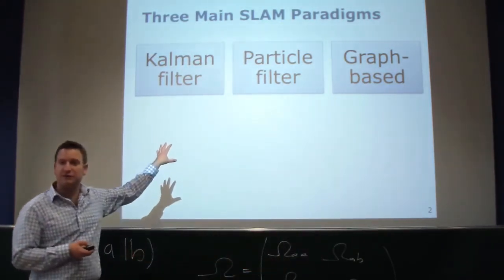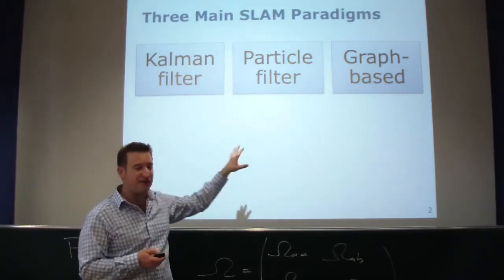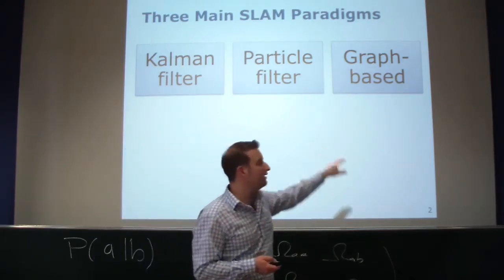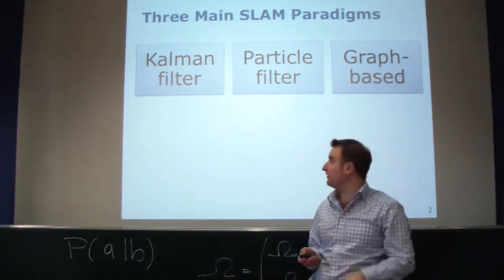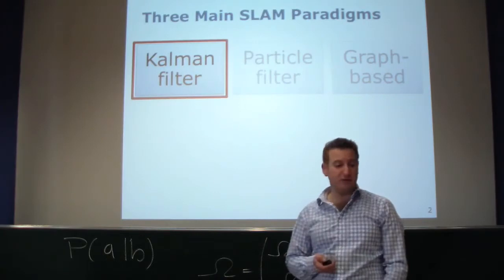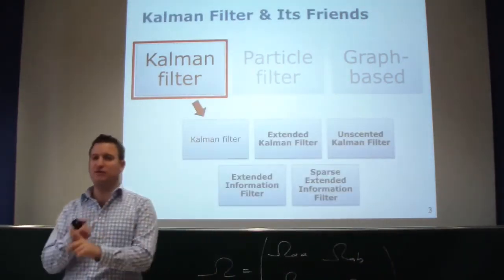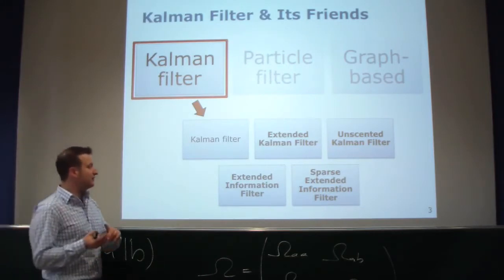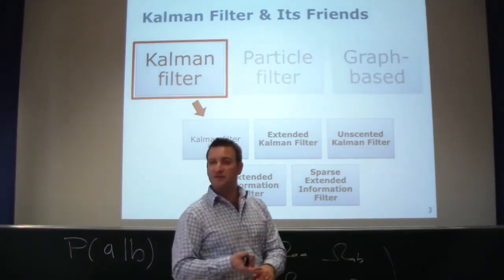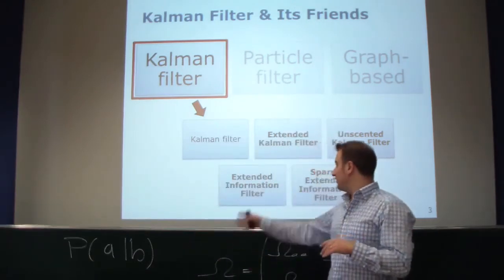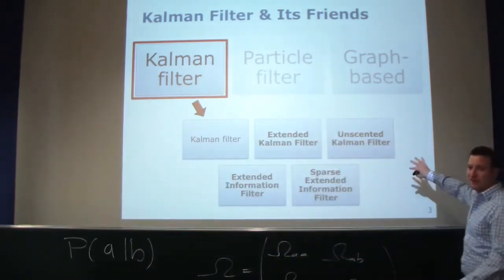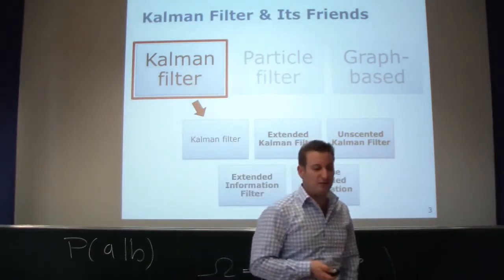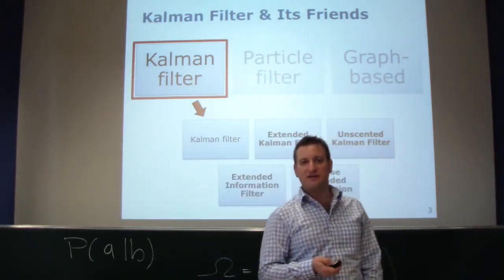We looked at the Kalman filter so far and looked into different aspects. We've seen the Kalman filter, the extended Kalman filter, the unscented Kalman filter, the extended information filter, and the sparse extended information filter. You can extend it further more, there are many more variants of the Kalman filter, but these are the key ones which have been used for addressing the SLAM problem.